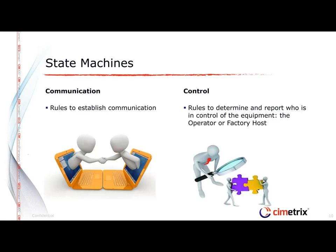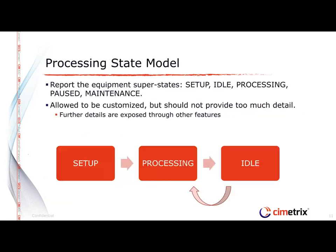GEM has state machines to manage different features. There is one for managing the rules to establish communication, and another for managing control of the equipment — because sometimes you run the equipment with the operator in charge, and sometimes you want to run it with the factory in charge through remote control. Every equipment is required to implement a processing state model, so you can monitor the basic state of the equipment — whether it's actually processing or sitting idle. You can also customize this to provide more detail.